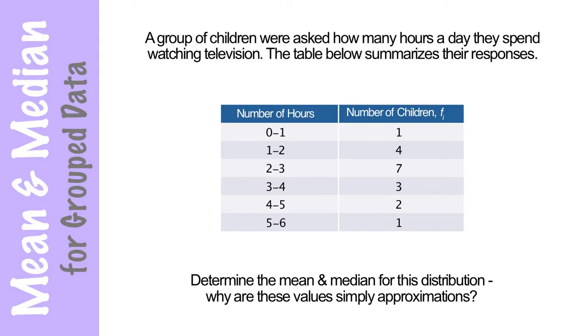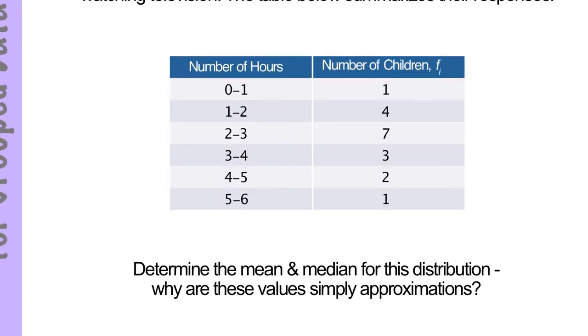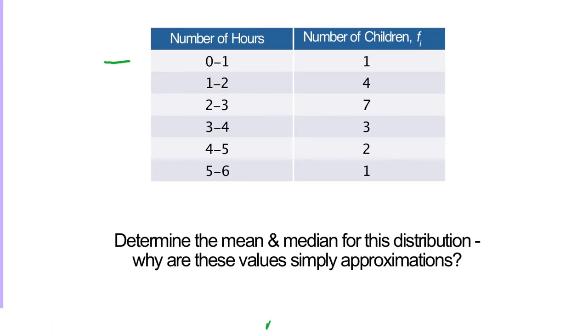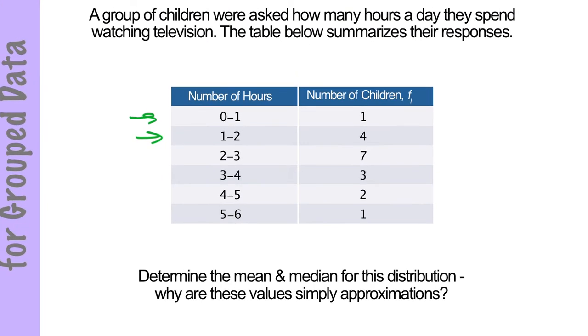Moving along, mean and median for grouped data. A group of children were asked how many hours a day they spend watching television. The table below summarizes their responses, and notice that it's grouped. So it's 0 to 1, 1 to 2, 2 to 3. So it's grouped in hours. A child could watch 1.5 hours, 1.1, 1.3, or 2. So time is measured in an infinite number of fractions, and so we're grouping the data together.